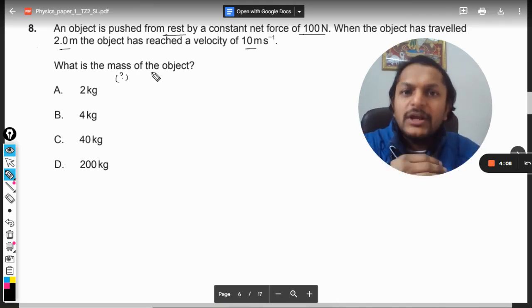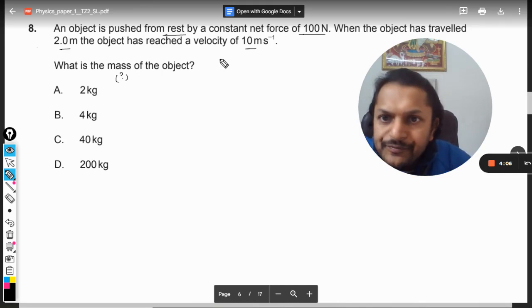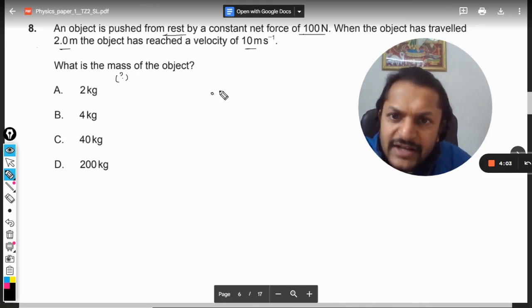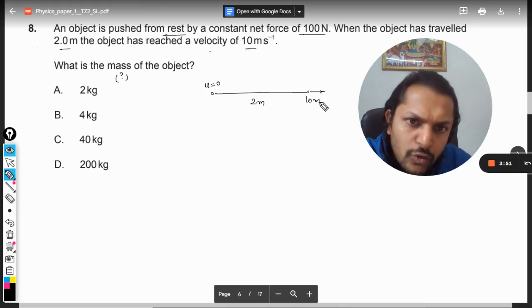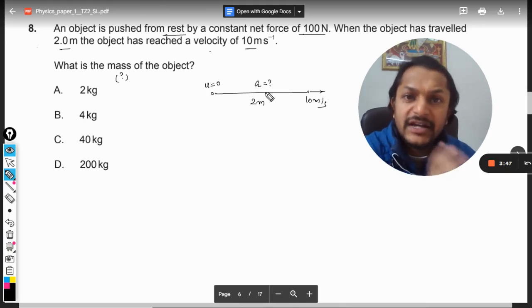So what is given? The body was at rest initially, so u is zero, and it has traveled a distance of 2 meters. The object has reached the velocity of 10 m/s, so now it is moving with the velocity of 10. We don't know what acceleration has been taken place here.